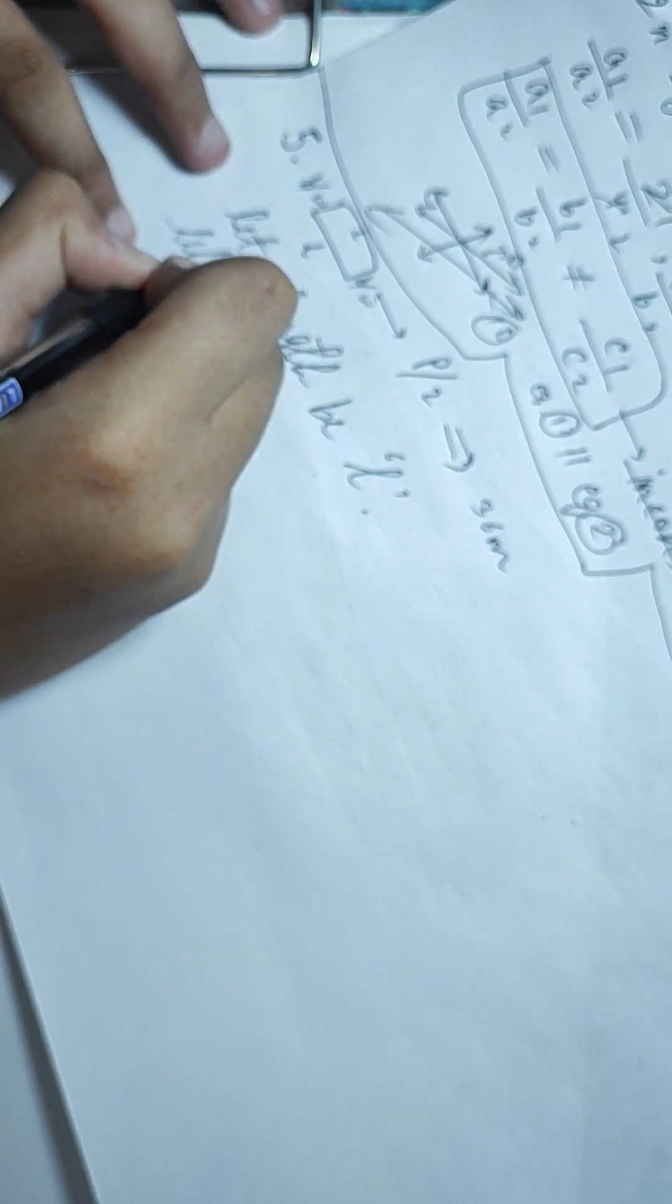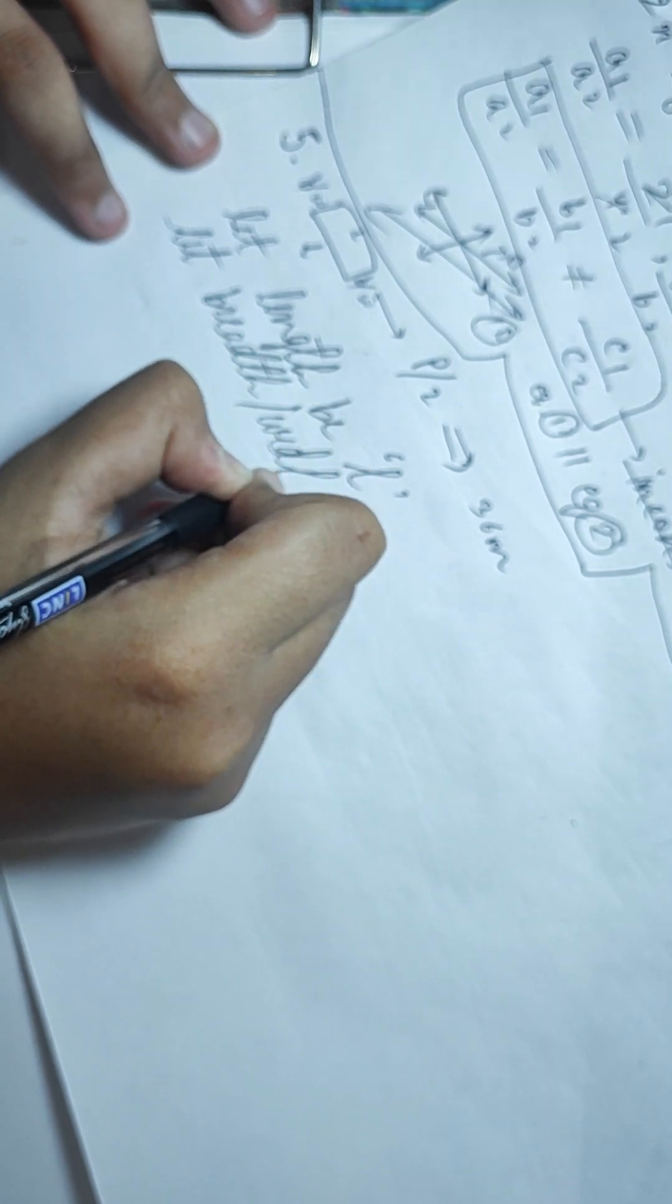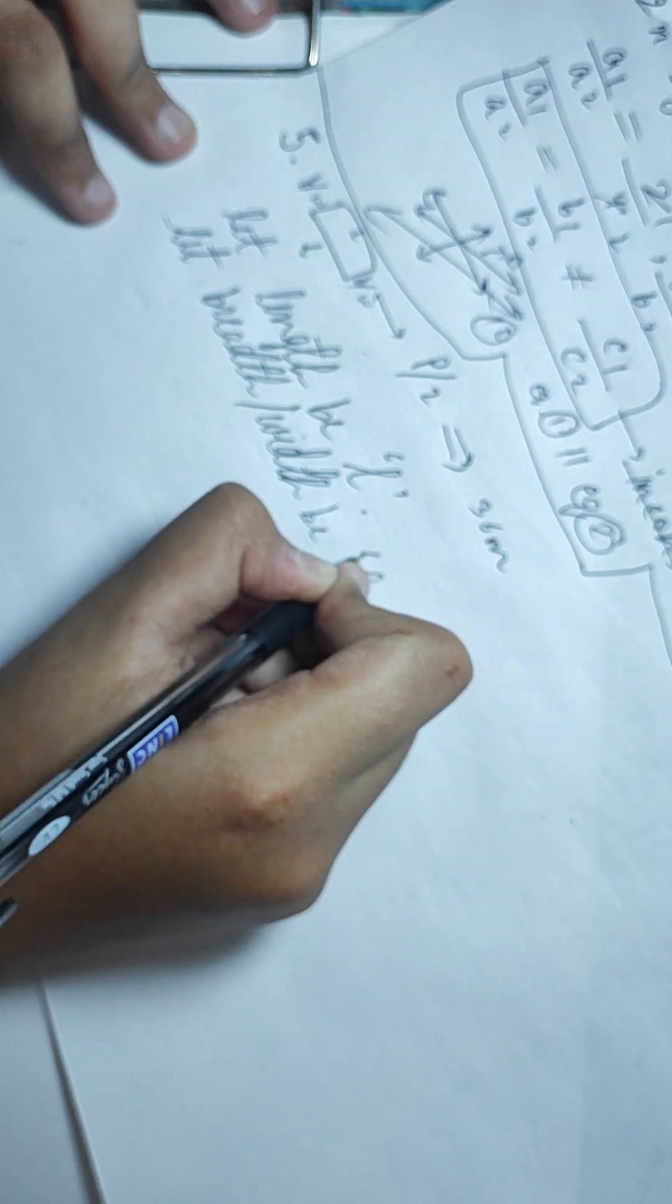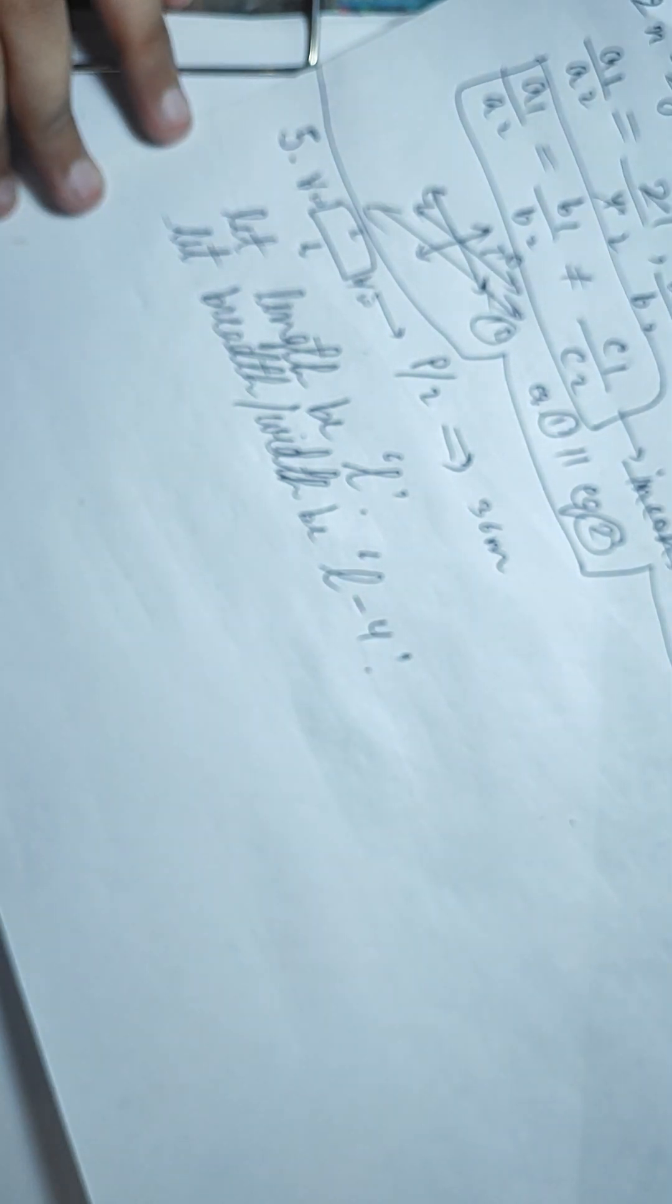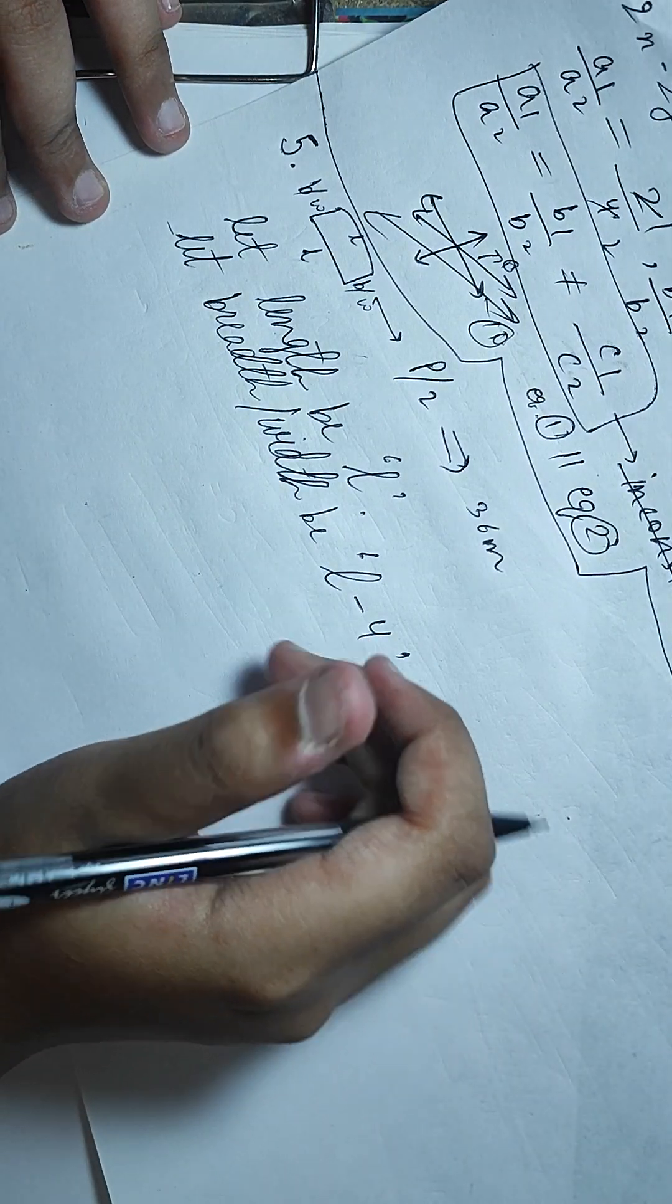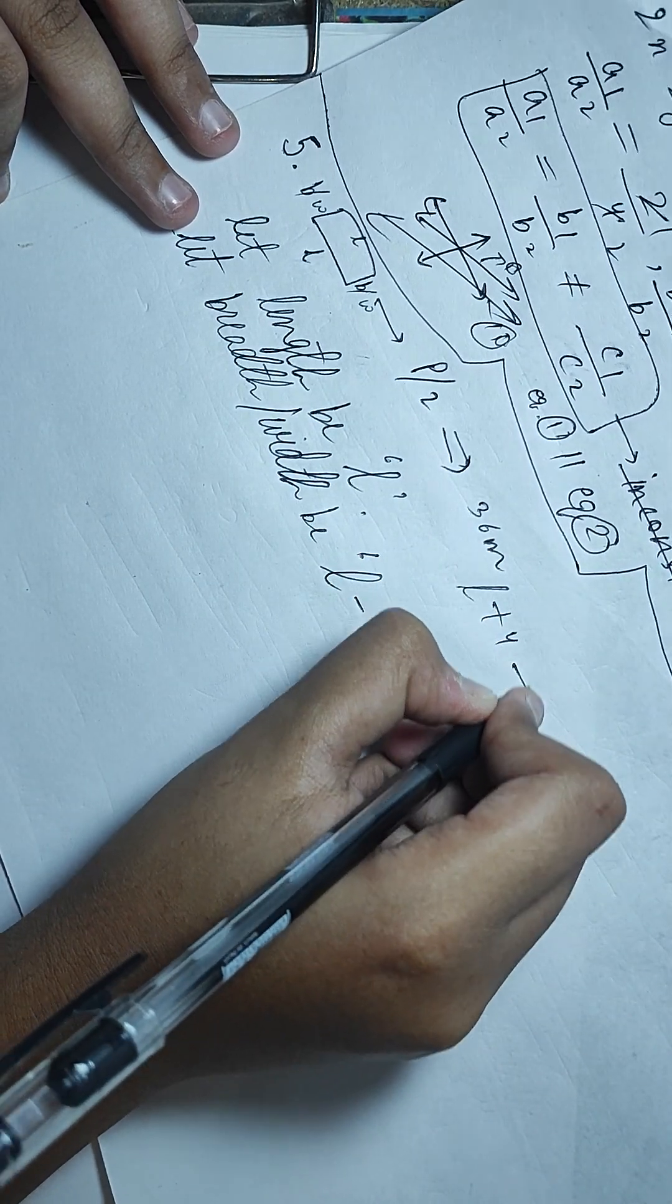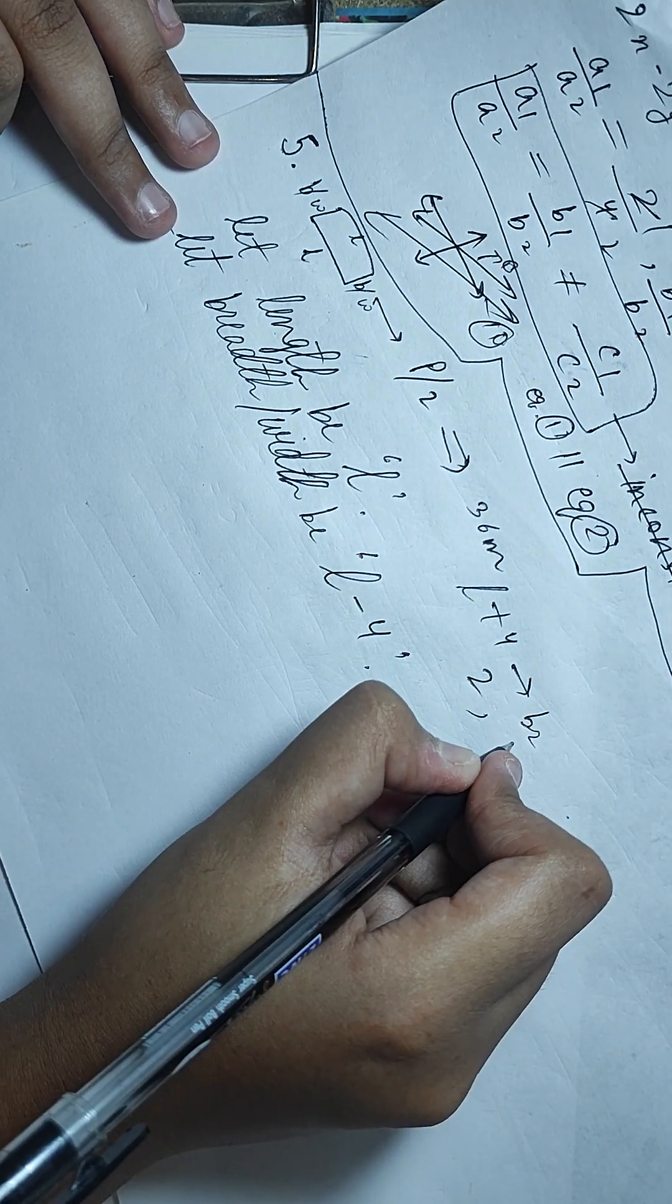Let breadth or width be L minus 4. Why? When you see the question, it is given that length is 4 meters more than breadth.